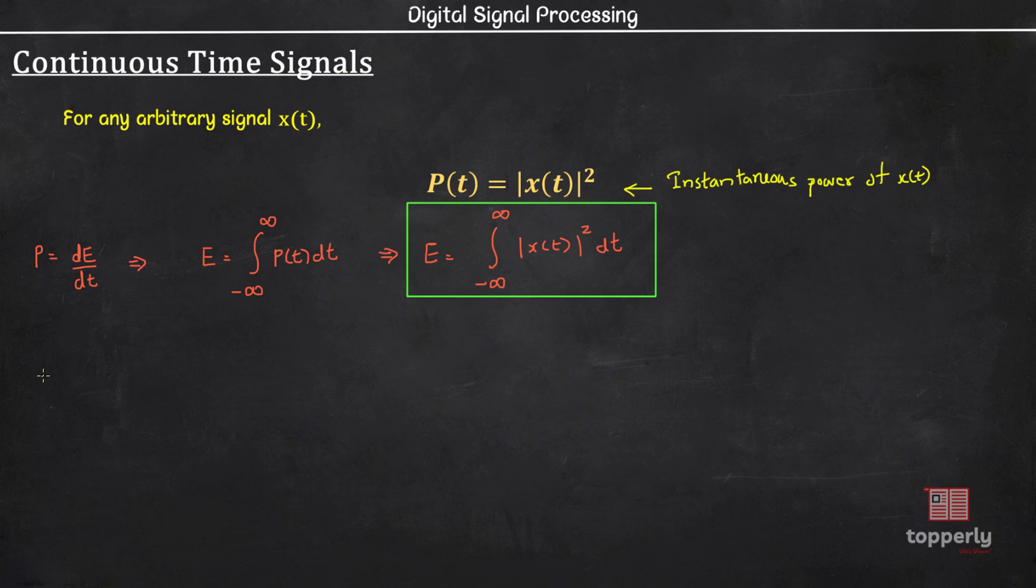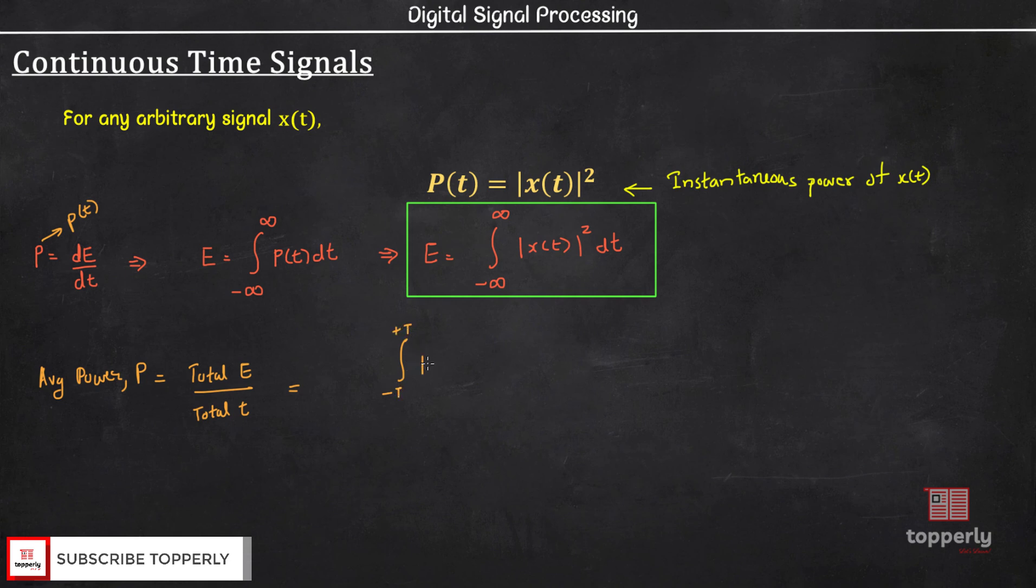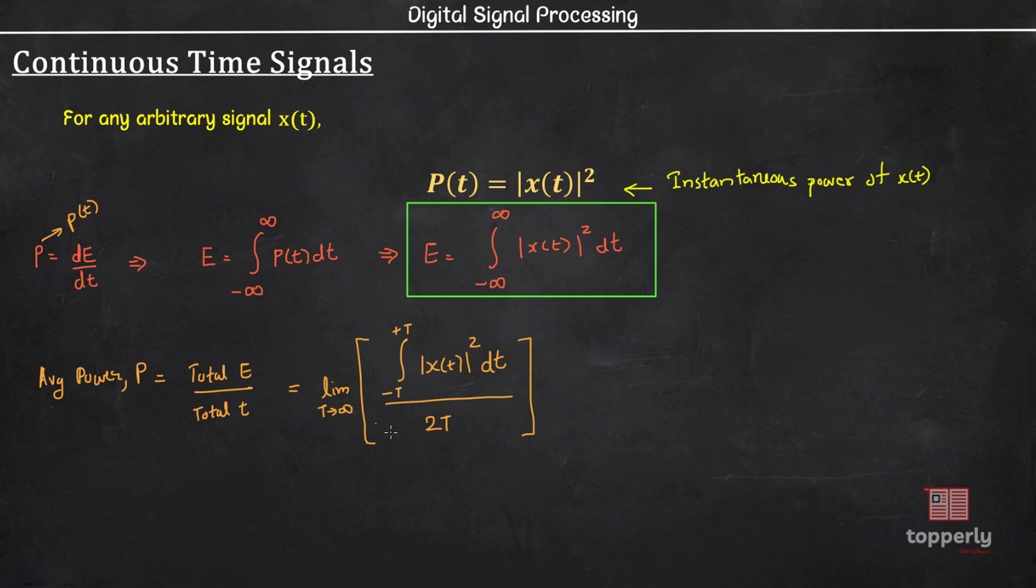Now let us find out the average power of a signal. Average power P is defined as total energy by total time. Also, please don't confuse this P with this P. This is instantaneous power P(t) and is always expressed as P(t), while average power is always expressed as capital P. So the total energy in some interval minus T to T is integral minus T to plus T X(t) squared into dt, and the total time for this interval is 2T. Now we can put this under limits till T tends to infinity. So this is the expression for average power in continuous time signals.